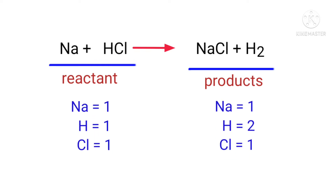If you look at this equation, the equation is not balanced. On the reactants side there is one sodium atom, one hydrogen atom, and one chlorine atom. On the products side there is one sodium atom, two hydrogen atoms, and one chlorine atom.